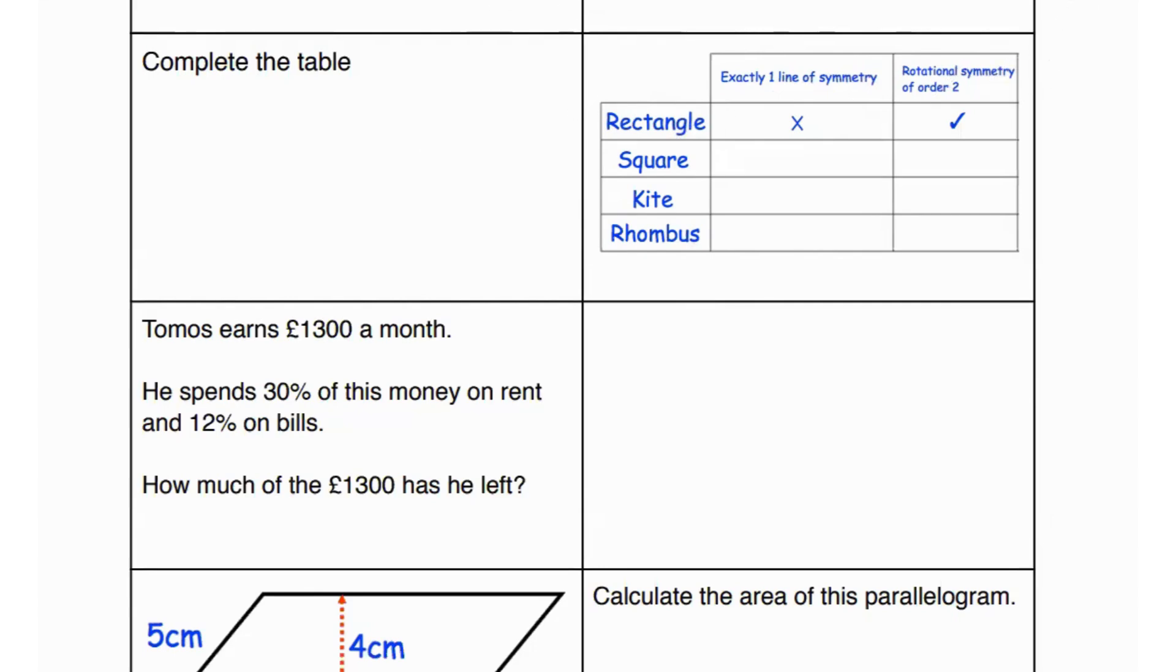So if we look at a square, we can see that the square has more than one line of symmetry. It has four lines of symmetry so no it's not a square. If we look at a kite, we can see that a kite has exactly one line of symmetry.